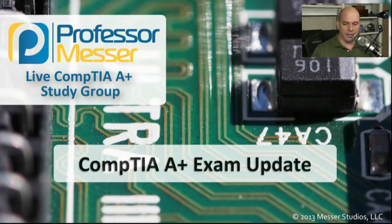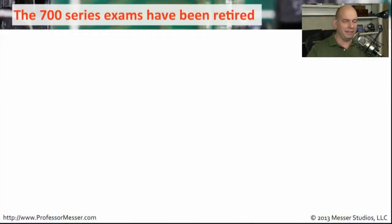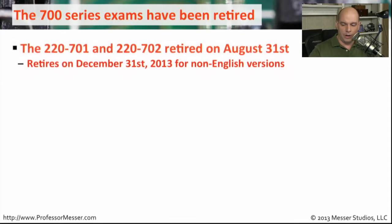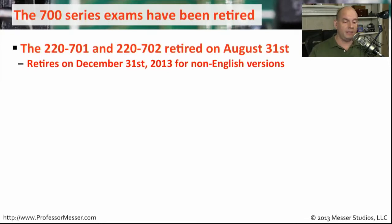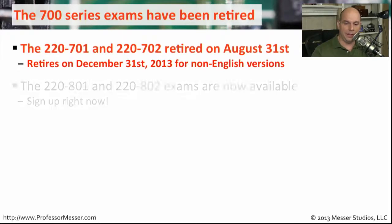Let's talk about what is new with the A-plus certification. A lot of questions this month were about what happened to the 700 series — it's gone, it is history. If you are in North America, the United States, Canada, or an educational institution, those 700 series exams are no more. You cannot take them; they have been retired. If you are in other parts of the world, you can take the 700 series in other languages through December. Now everybody has shifted focus — I've been warning you for months to shift to the 800 series, and now you don't have a choice.